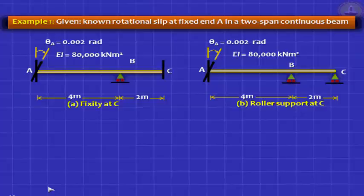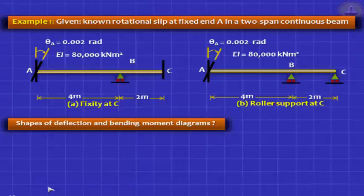Another problem is, and this really tests your ability to gauge the difference between a fixed support and a simple support. At C, instead of fixity, I make it a roller support. Now, my first question to you is, can you draw the probable deflected shapes of these two, due to the rotation slip at theta A, and can you also predict the shape of the bending moment diagram?